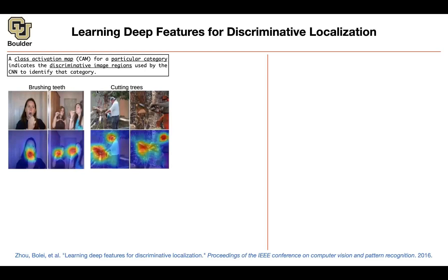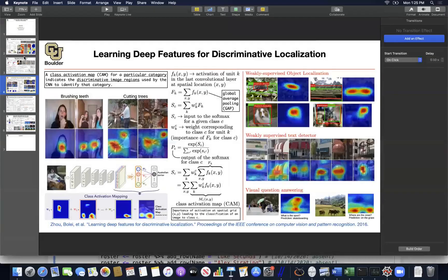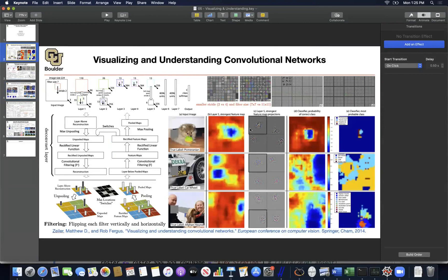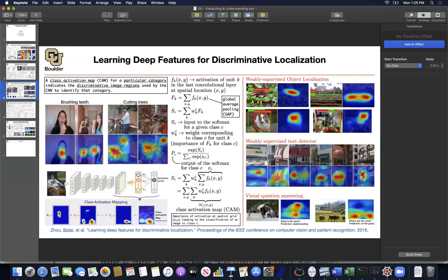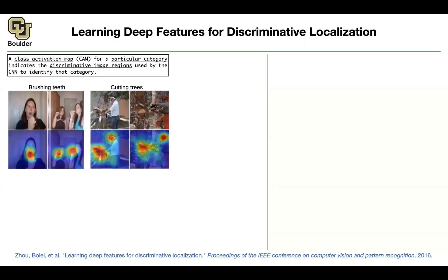For example, the concept 'brushing teeth': two images go into the network and the output class activation maps are heat maps telling us that the algorithm is focusing on the brush and the mouth area. For 'cutting trees,' the algorithm focuses on the man and the chainsaw. This is different from the visualizations in the first paper, which used occlusion of parts of the image to find the most important regions — this method is more generic and gives you more information.